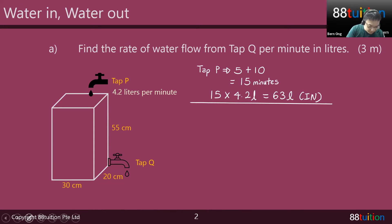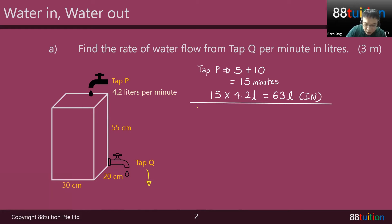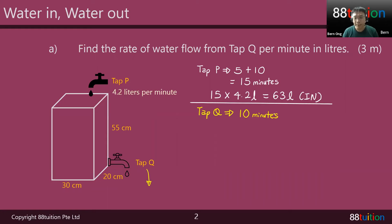Now, tap Q — water is supposed to be flowing out from tap Q. How many minutes? 10 minutes. This time around it's only 10 minutes. But we don't know the rate of water flowing out from tap Q per minute. That is the thing you are supposed to look for.